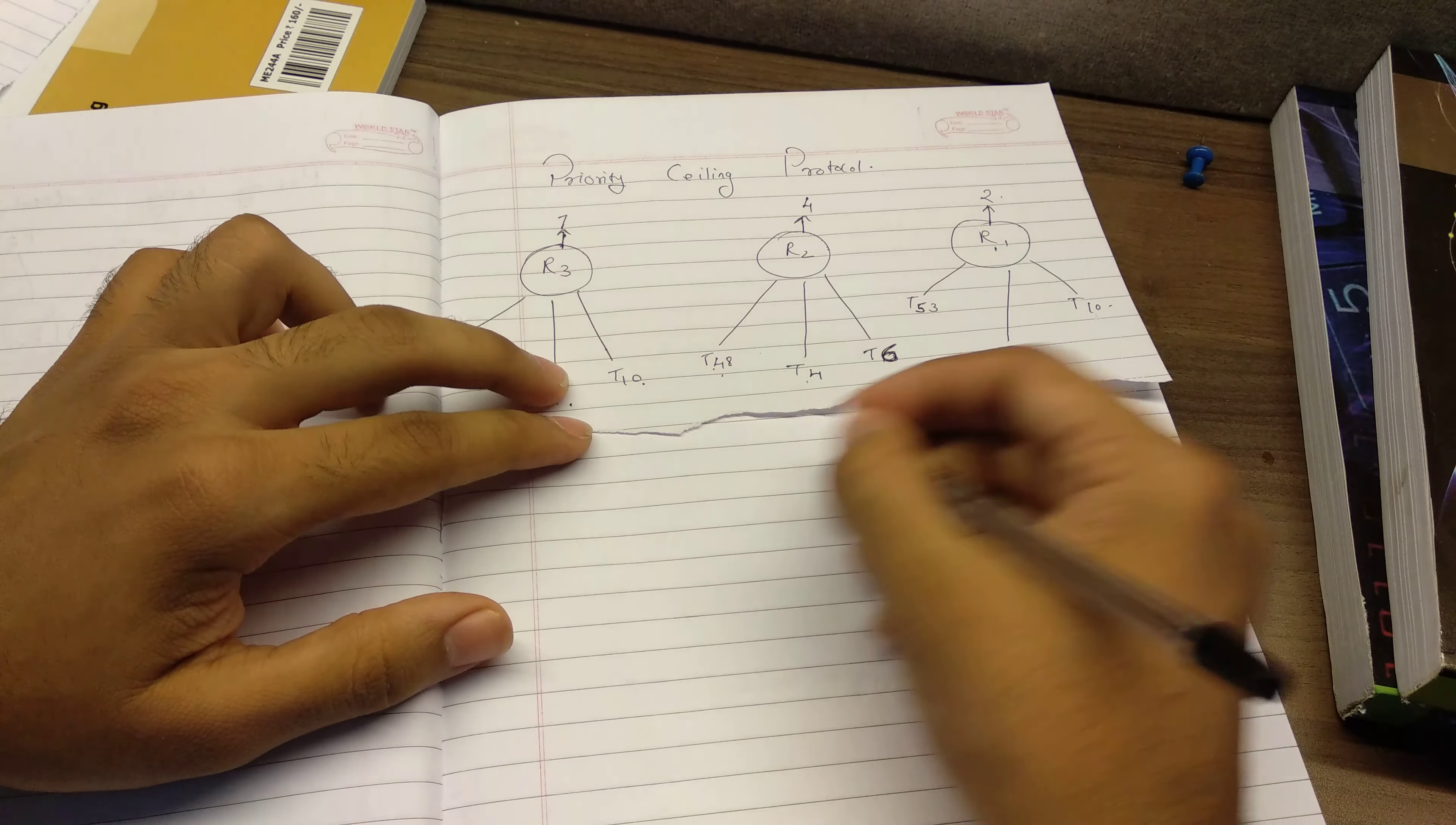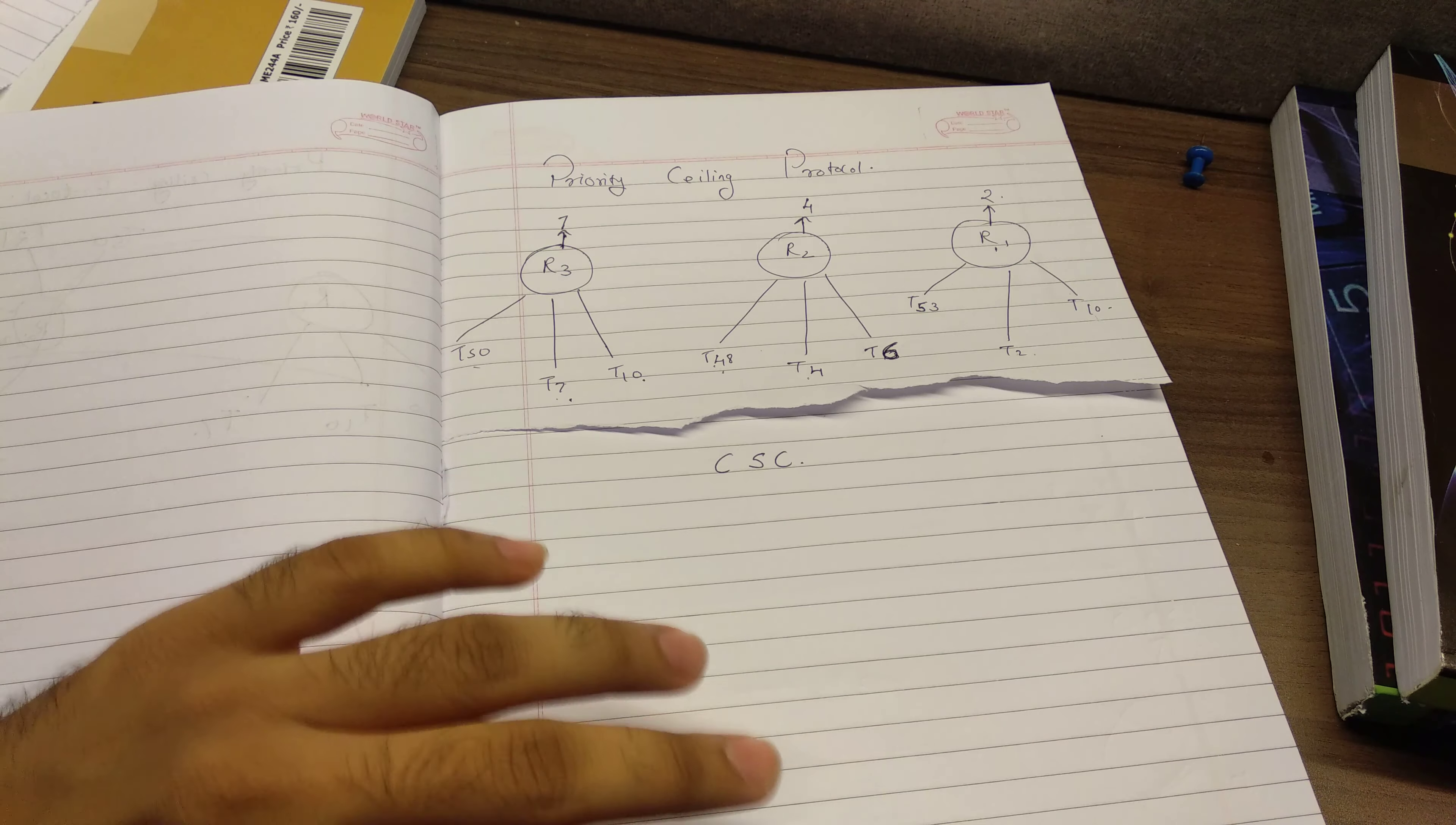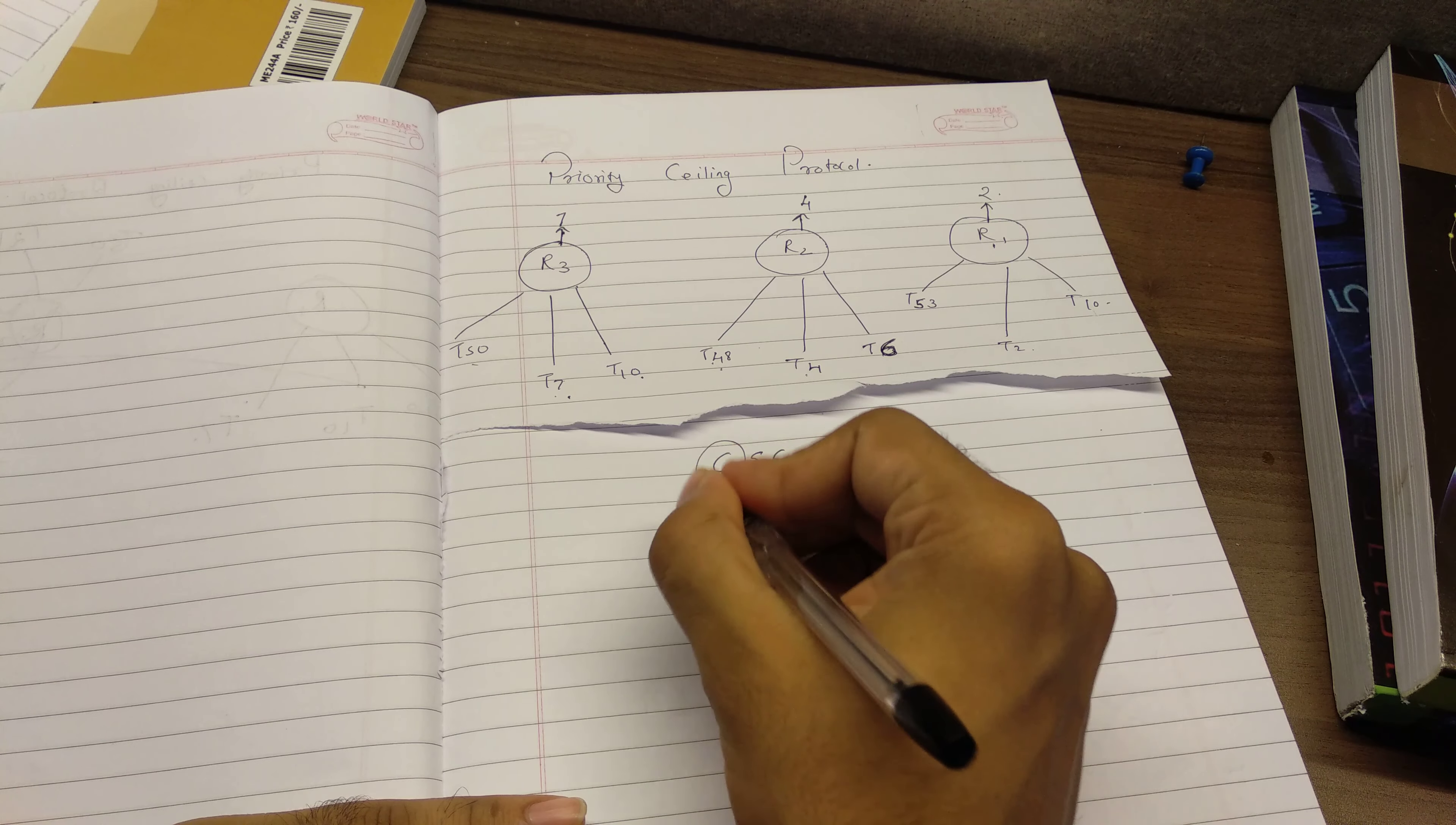Now there is another term associated with this, which is called current system ceiling. So one mistake that we do is we feel that current system ceiling is the maximum of all the resources available, but that is not how current system ceiling works. Current system ceiling is basically the maximum, as the name says, it is the maximum of all the resources that are currently being in use. That is why it is current system ceiling.